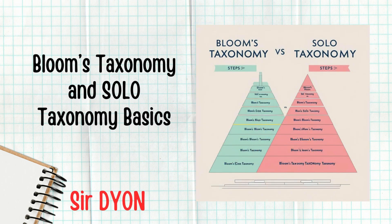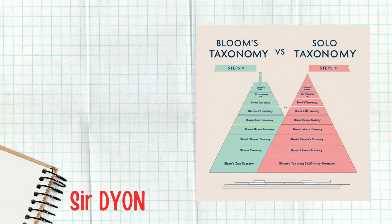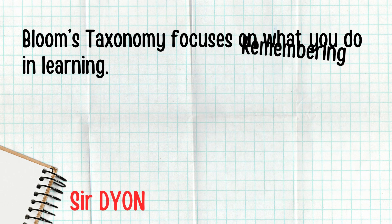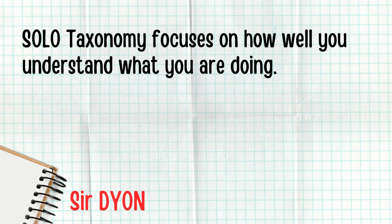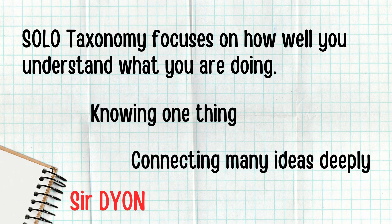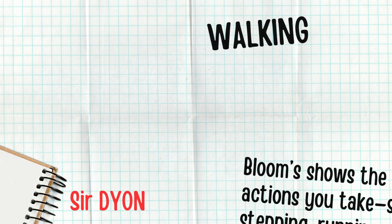Let's start with a quick overview. Bloom's Taxonomy focuses on what you do in learning, like remembering, understanding, and creating. Solo Taxonomy focuses on how well you understand what you're doing, from knowing one thing to connecting many ideas deeply. Now let's connect these ideas by aligning their levels.